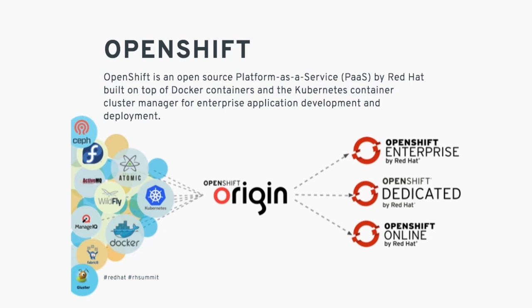What is OpenShift? It's a platform-as-a-service technology built on top of Docker and Kubernetes for running containers at scale. OpenShift includes not only these two technologies but also a large ecosystem to help you deploy faster. It's available in several flavors: OpenShift Enterprise for private cloud, OpenShift Dedicated which is the public cloud managed by Red Hat, and OpenShift Online for deploying applications to a public cloud.